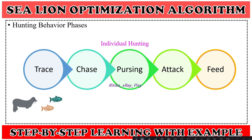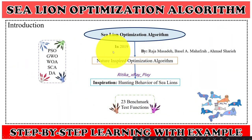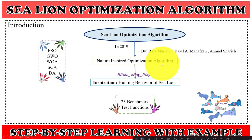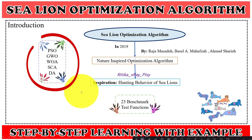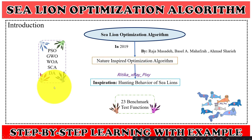The Sea Lion Optimization Algorithm was introduced in 2019. It is a nature-inspired, population-based metaheuristic optimization algorithm inspired by the hunting behavior of sea lions. This algorithm provides efficient results when compared with different algorithms like Particle Swarm Optimization, Gray Wolf Optimizer, Whale Optimization Algorithm, Sine Cosine Algorithm, and Dragonfly Algorithm.